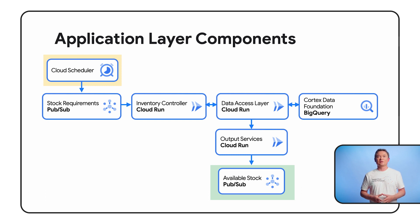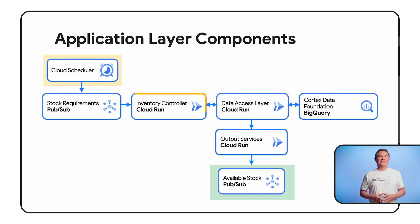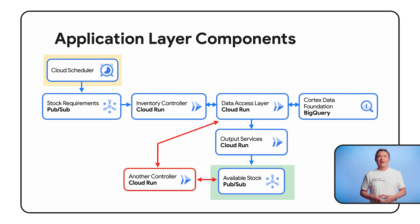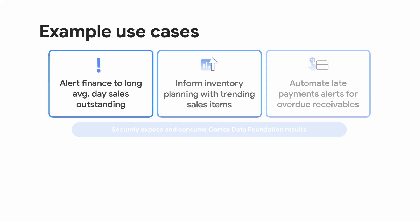It's composed of the following services to help you get started quickly: an event source — this is usually your system of record. The application layer example leverages Google Cloud Scheduler to make it simple. A controller service, in this case inventory, to query inventory levels. A data access layer that will securely access BigQuery. And an output service to publish the results of your query through a PubSub. The templates allow you to easily add other microservices with additional functionality and reuse the data access and output patterns.